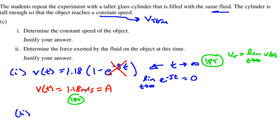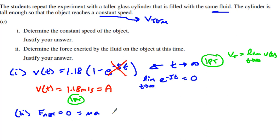The last part of the problem is C2. It says: determine the force exerted by the fluid. We know the net force is equal to 0. Why? It equals mass times acceleration, and the acceleration is equal to 0 as we go towards terminal velocity.